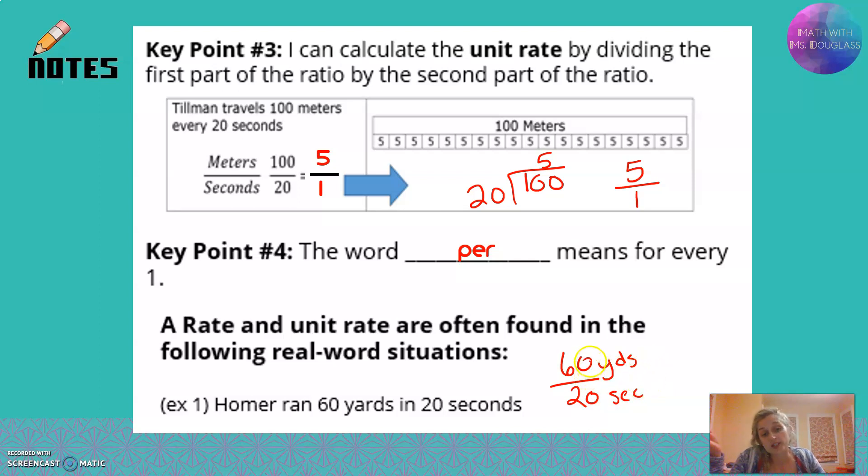I'm going to start by dividing by 10, because they both end in 0. That's 6 yards for every 2 seconds. But I want that unit rate. I want for every 1. I'm going to divide again. Simplify. This becomes Homer can run 3 yards per second, for every 1 second.